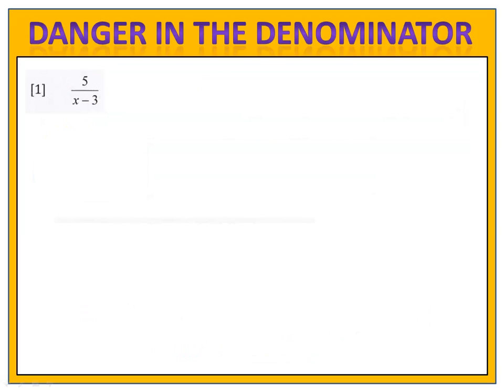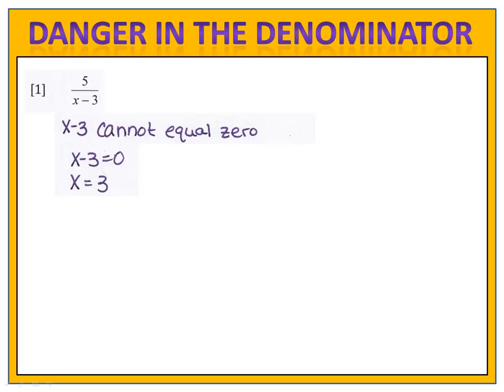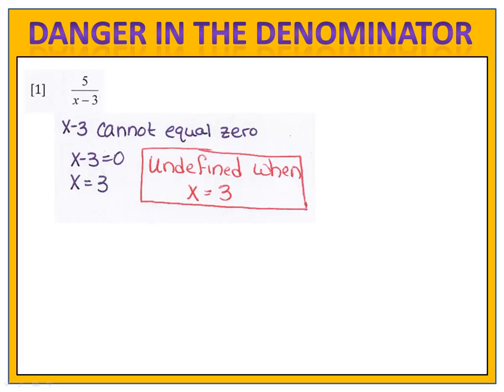Take a look at our first exercise. We have 5 over x minus 3. We could plug any number in for x that we want, but we have to be careful to make sure that the fraction never has a zero in the denominator. What would cause it to be zero in the denominator? Well, x minus 3 cannot equal zero. If we solve for x in the denominator,